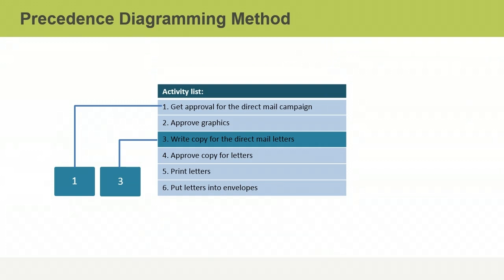So for now, you leave out the second activity, which is approving graphics, and you add a node to represent the third activity, writing copy.